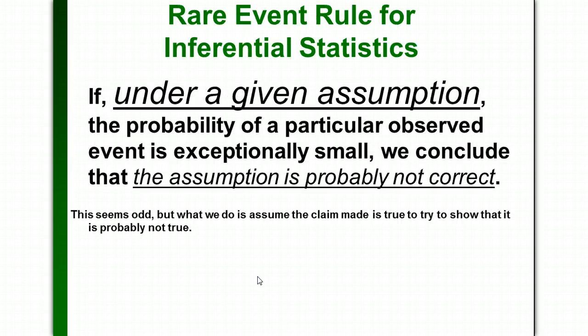Remember when we talk about rare events — normally that's when we've been talking about two standard deviations from the mean, the 5% cutoff. We're still using that. The rare events are still those two basic components that we've been talking about. We're going to tweak them a little bit in this section, but that's still the basic idea.